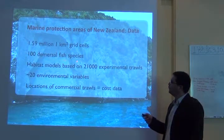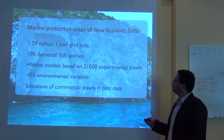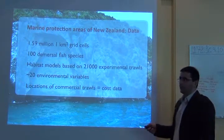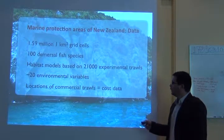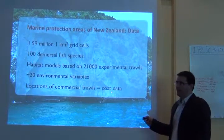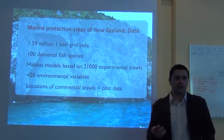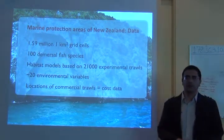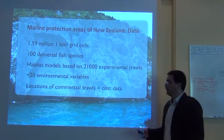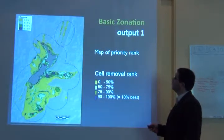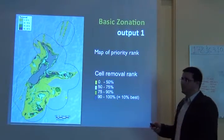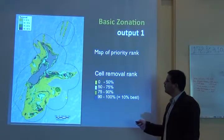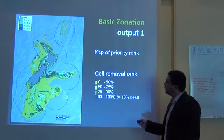They used data for a hundred diverse fish species, habitat models, and 20 environmental variables. They also used locations of commercial trawls as cost data — a constraint representing places not suitable for conservation because of fisheries, for example. Then you run this into Zonation.